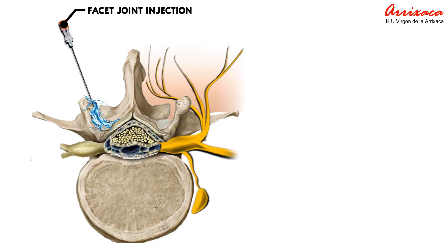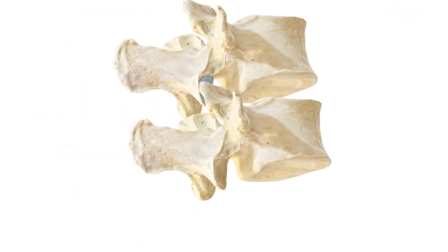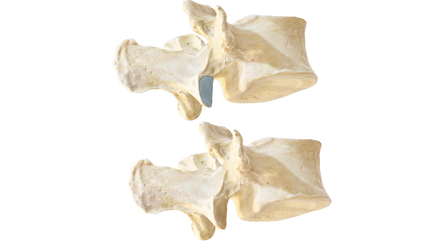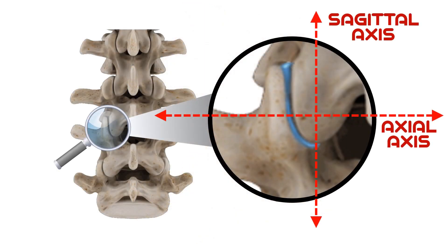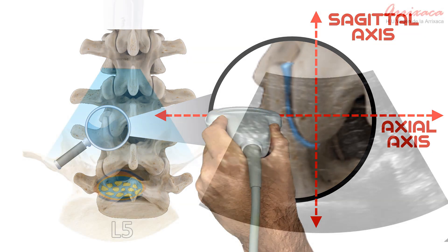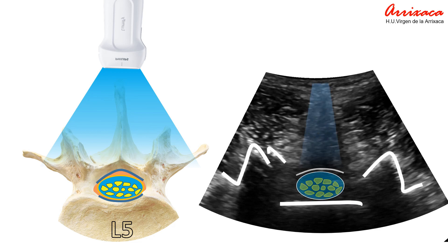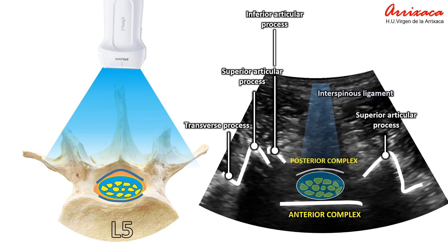We will start with the description of the facet joint injection, probably the most frequent and suitable procedure performed under ultrasound. The facet articular line is oriented on a sagittal axis. Therefore, the scanning plane that will allow better joint scanning will be the axial plane. Once we have identified the space in which we are going to perform the injection and marked it on the patient's skin, we will perform a scan on the axial axis.